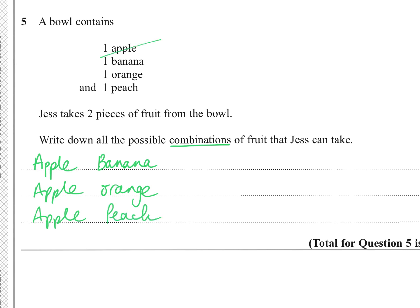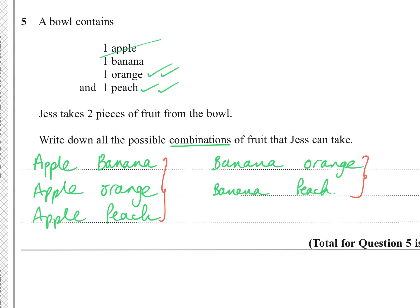Cross apple off and move to banana: banana-orange, banana-peach. Then the last one is orange-peach. There's a nice pattern — three combinations starting with apple, two with banana, one with orange. That's a 3-2-1 pattern, giving six combinations total.